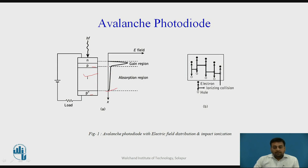The electric field is nearly uniform across the intrinsic region. In the diagram you can see the impact ionization process, so we will first discuss what the impact ionization process is.